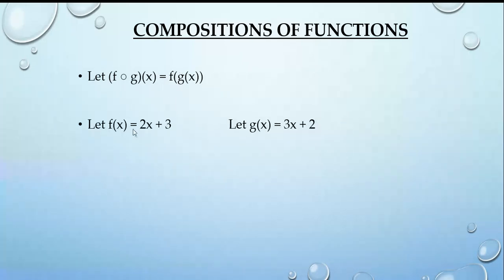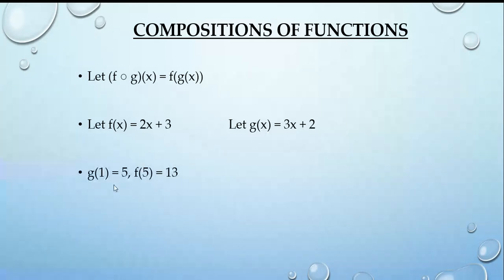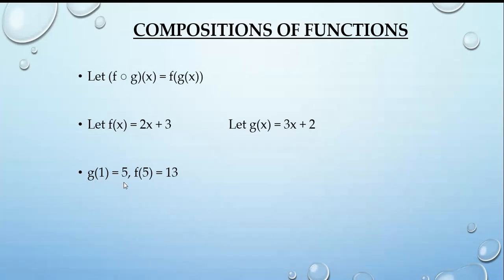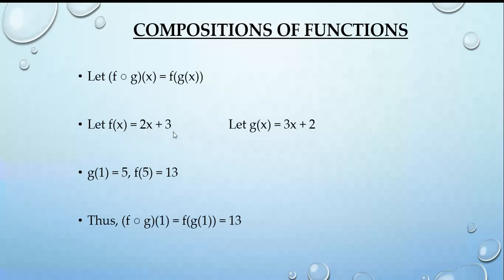Suppose we have two functions: f(x) = 2x + 3 and g(x) = 3x + 2. To find g(1), we put x = 1 into g, giving 3 + 2 = 5. Now for f composition g, we first calculate g(1) = 5, then f(5): substituting 5 into f gives 2(5) + 3 = 10 + 3 = 13.